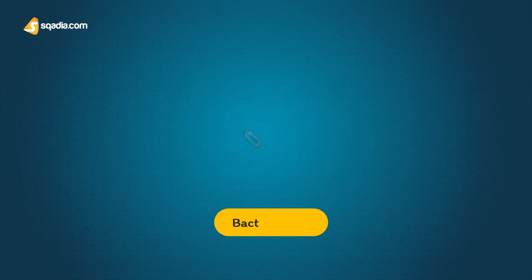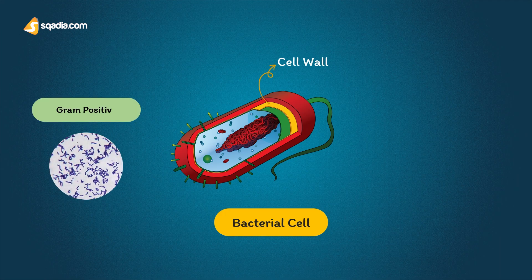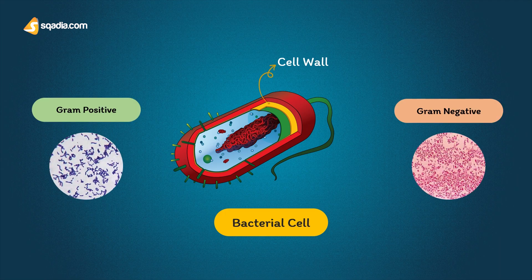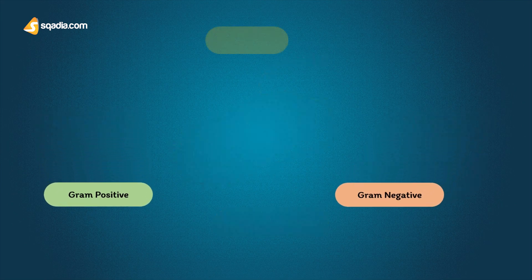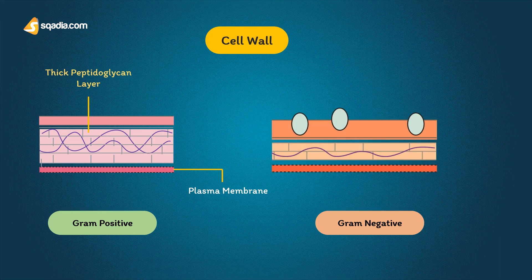Bacterial cell walls are rigid and protect the organism from differences in osmotic tension between the cell and the environment. The cell walls of gram-positive and gram-negative bacteria are different. Gram-positive cell walls have a thick peptidoglycan layer and a cell membrane, whereas gram-negative cell walls have three layers: an inner membrane, an outer membrane, and a thinner peptidoglycan layer.